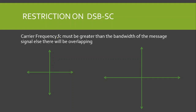There is one restriction for double sideband suppressed carrier: the carrier frequency fc must be greater than the bandwidth B of the message signal; otherwise there will be overlapping. The message signal is also called the modulating signal or baseband signal. If fc is smaller than B, this condition is not satisfied and overlapping will occur.